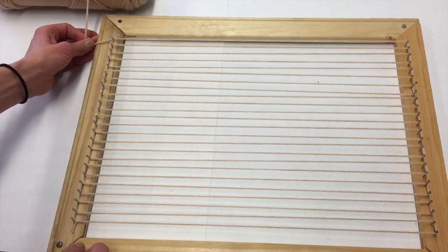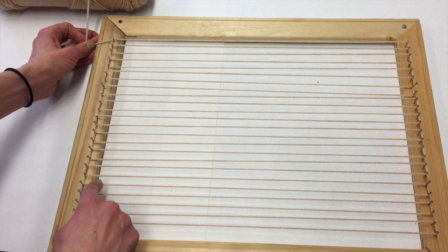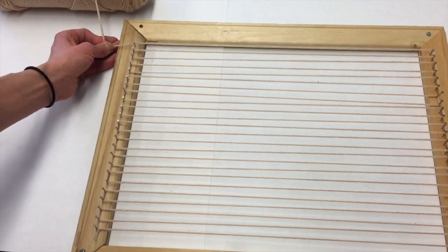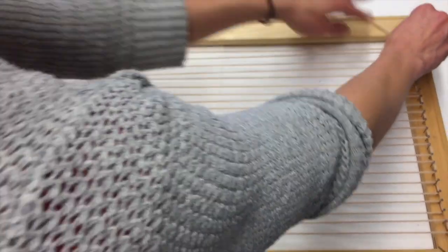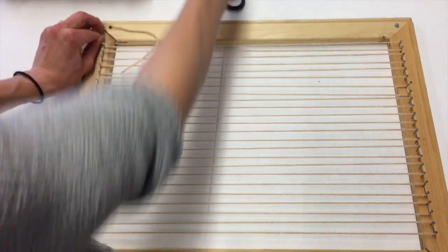Once you get to the end of your loom, go ahead and count your warp strings and make sure you have an even number. I have an even number, but if I didn't and I had an odd, I would just undo one of my strings and tie it on the opposite side. But because this is even, I don't need to do that.